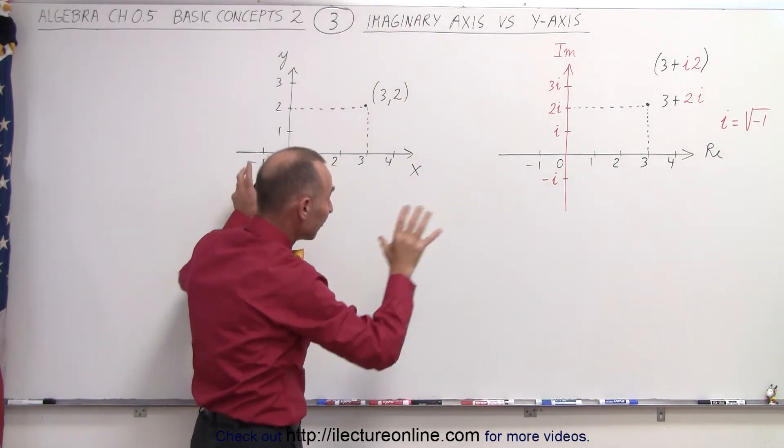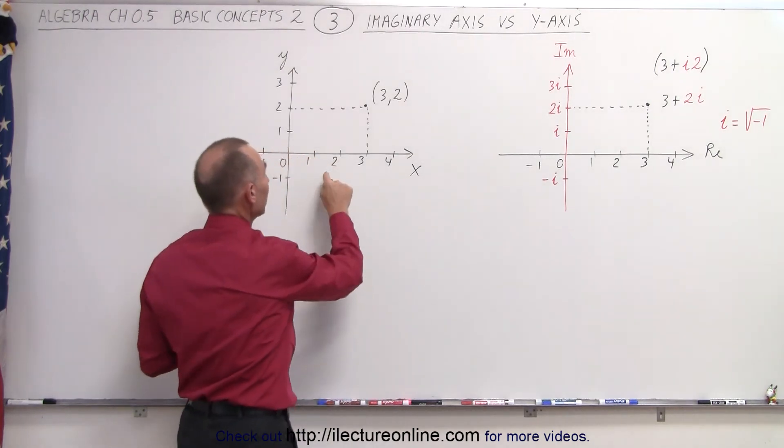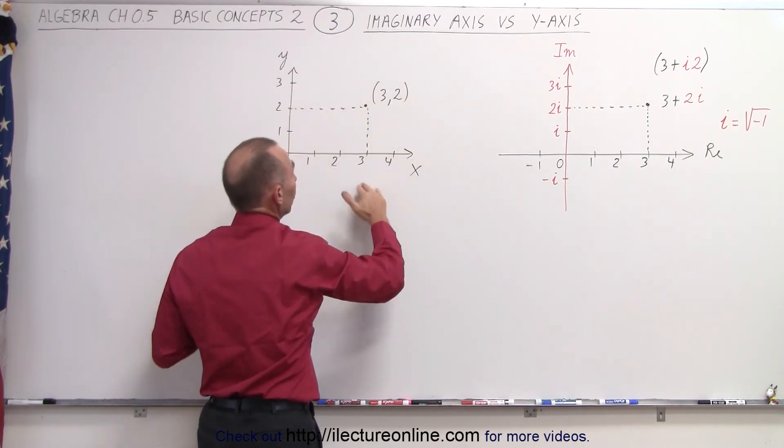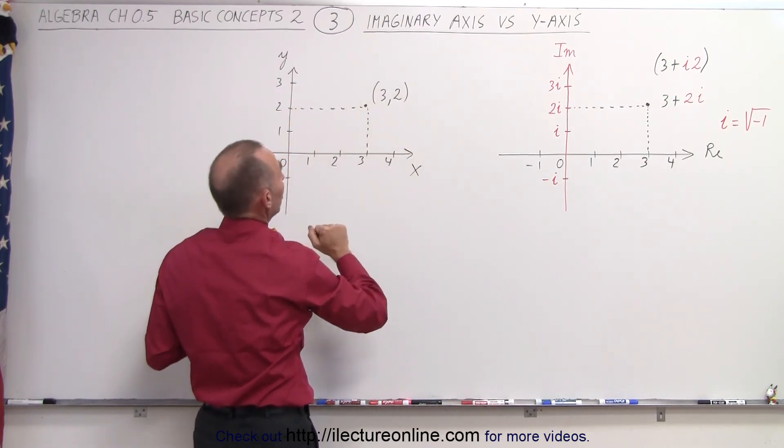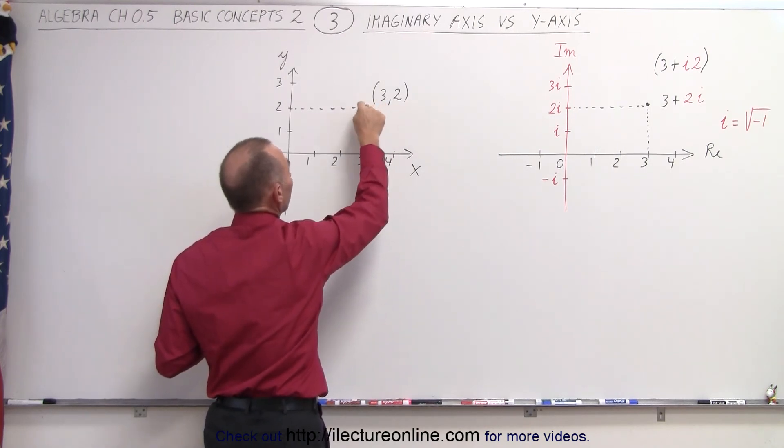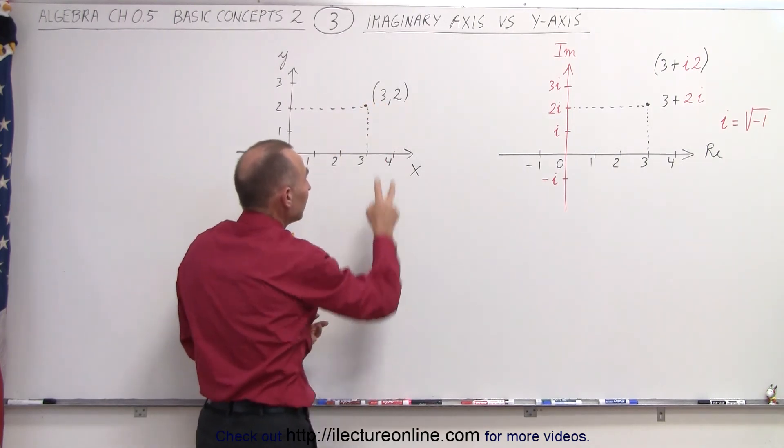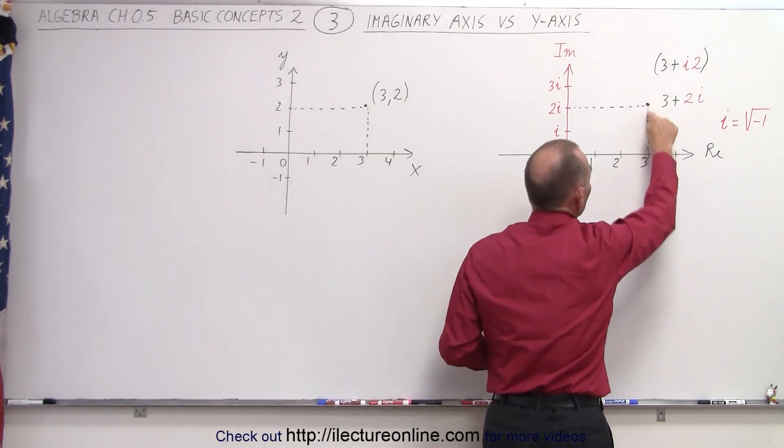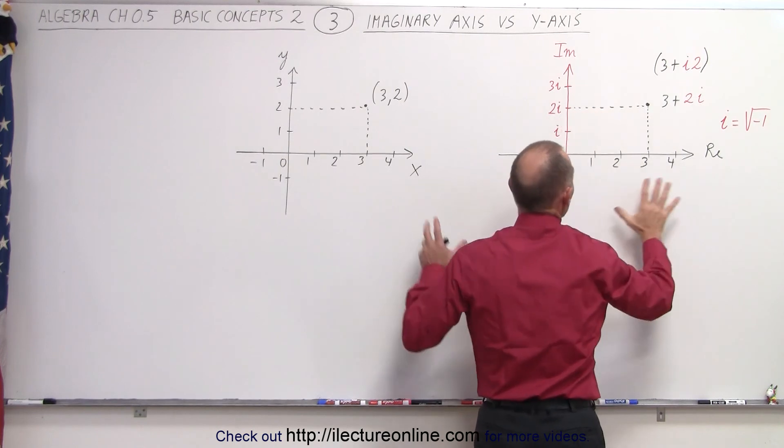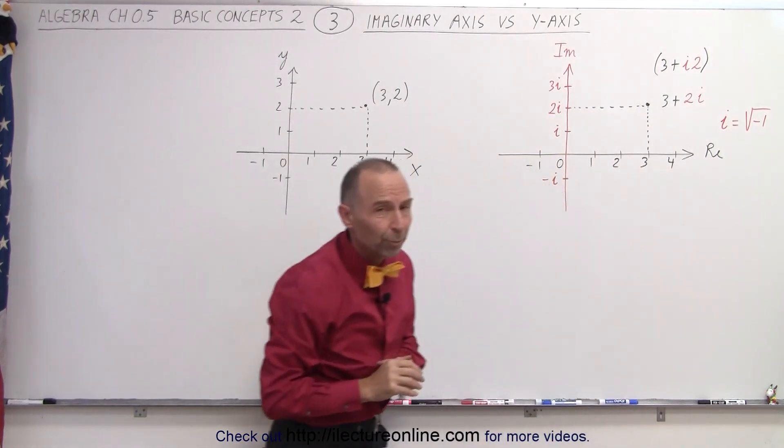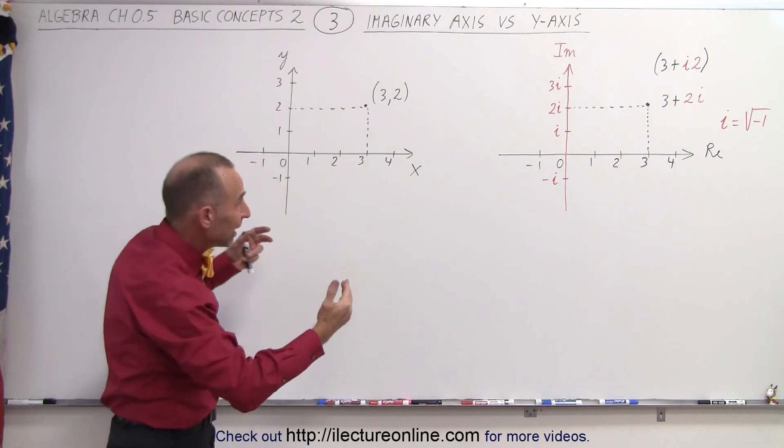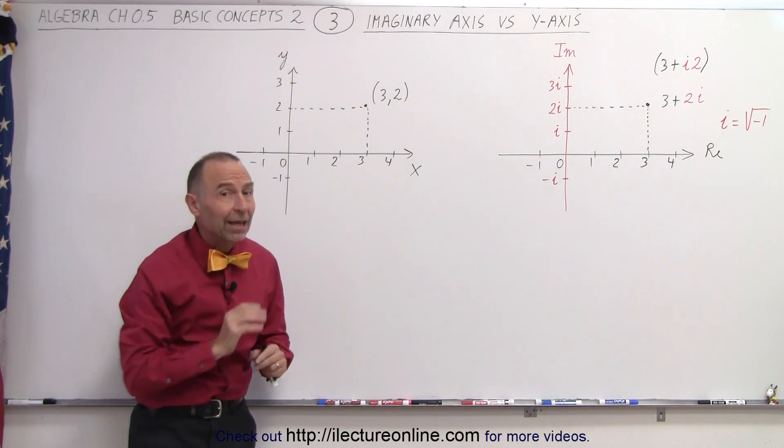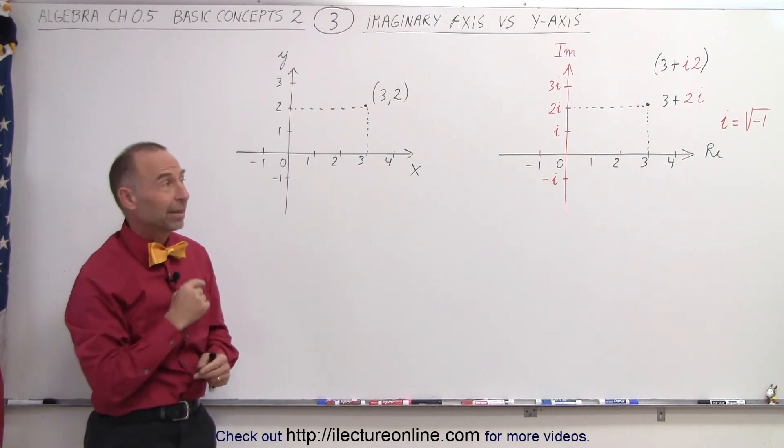But notice there's some very big difference between the two. This simply represents a point on an x-y plane, a two-dimensional plane, the Cartesian coordinate system, as we might call it, which has two numbers representing the location on that x-y plane. Both of these numbers are real numbers. Here, we have a single number represented by a real part and an imaginary part. And so you can see there's definitely a real difference between those two. Graphically, the approach seems to be about the same, but they have very different meanings, and so we can't forget about that. That's how it's done.